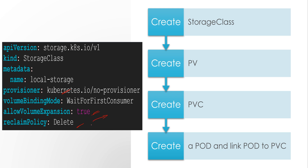Once the persistent volume is deleted, we want to either keep the data or delete it — that will be defined by the reclaimPolicy field. If we don't give any option, the default will be Delete. And allowVolumeExpansion is a boolean value true or false. If we give this option as true, we can increase the storage capacity even while the pod is live.